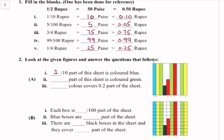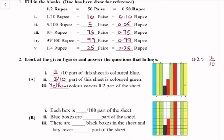The second part of this sheet is colored green. So we have to find the green colored part. There are 1, 2, 3 parts colored green — 3 out of 10. Next, we need to find which color covers 0.2 part of this sheet. We can also write 0.2 as 2 by 10. The color that has only 2 columns is yellow. So yellow color covers 0.2 part of the sheet.